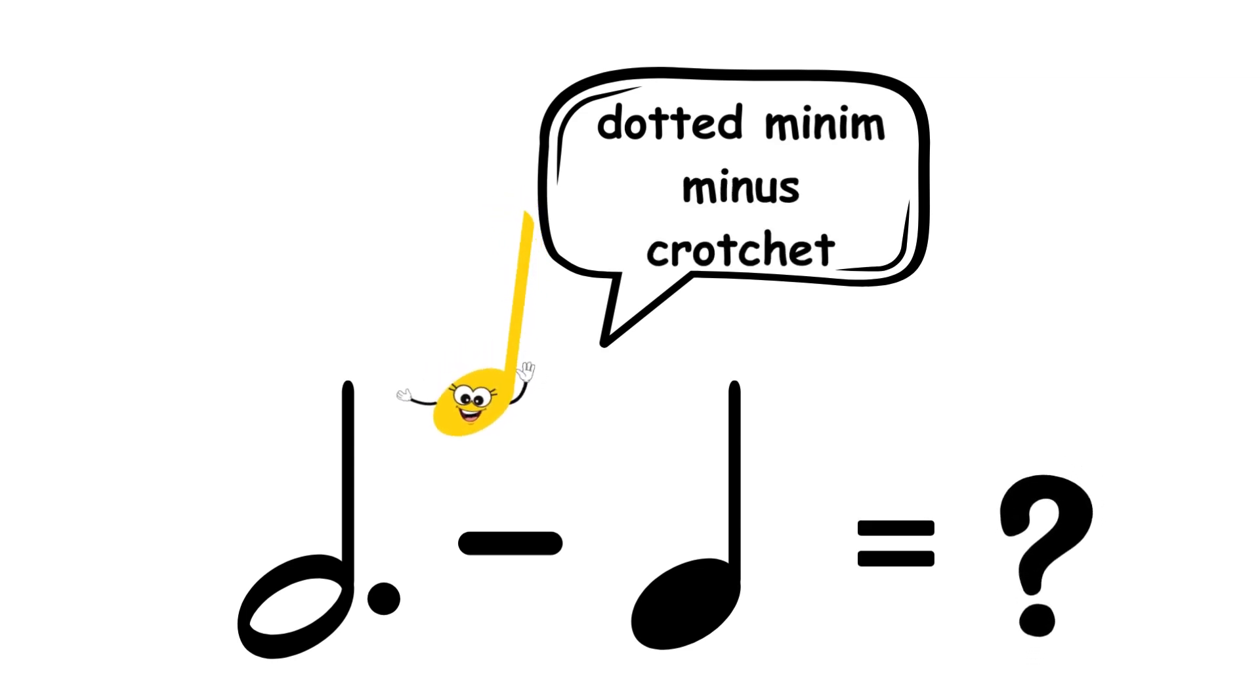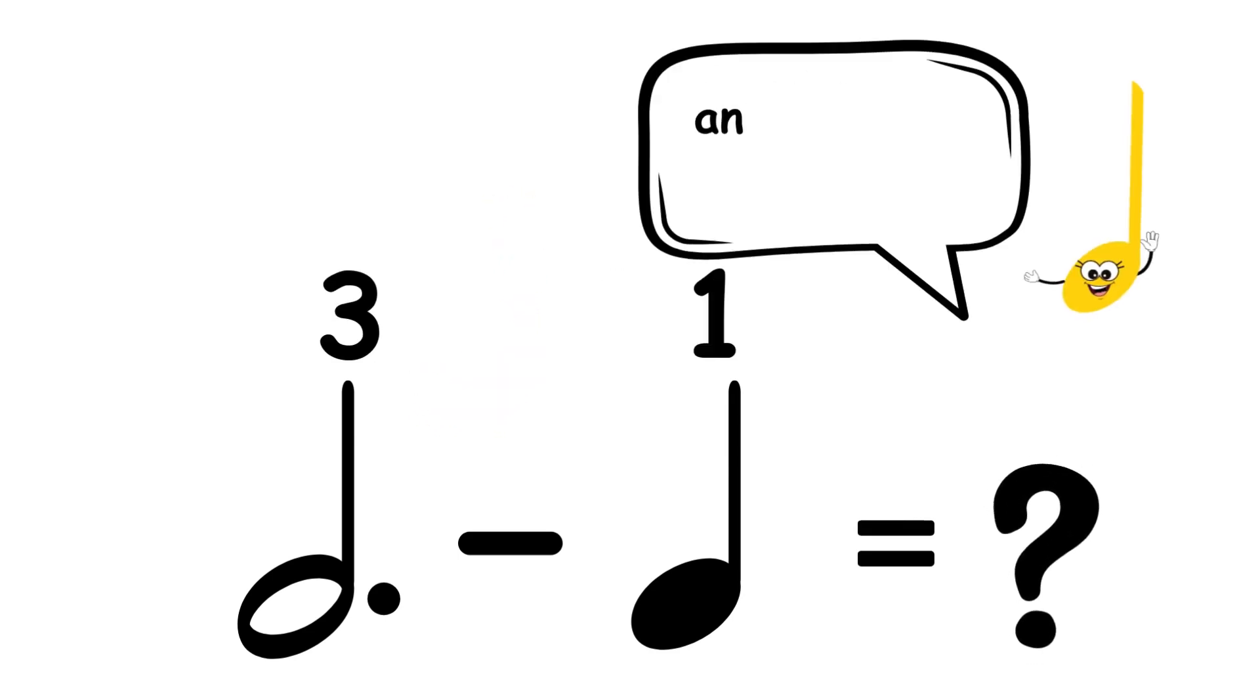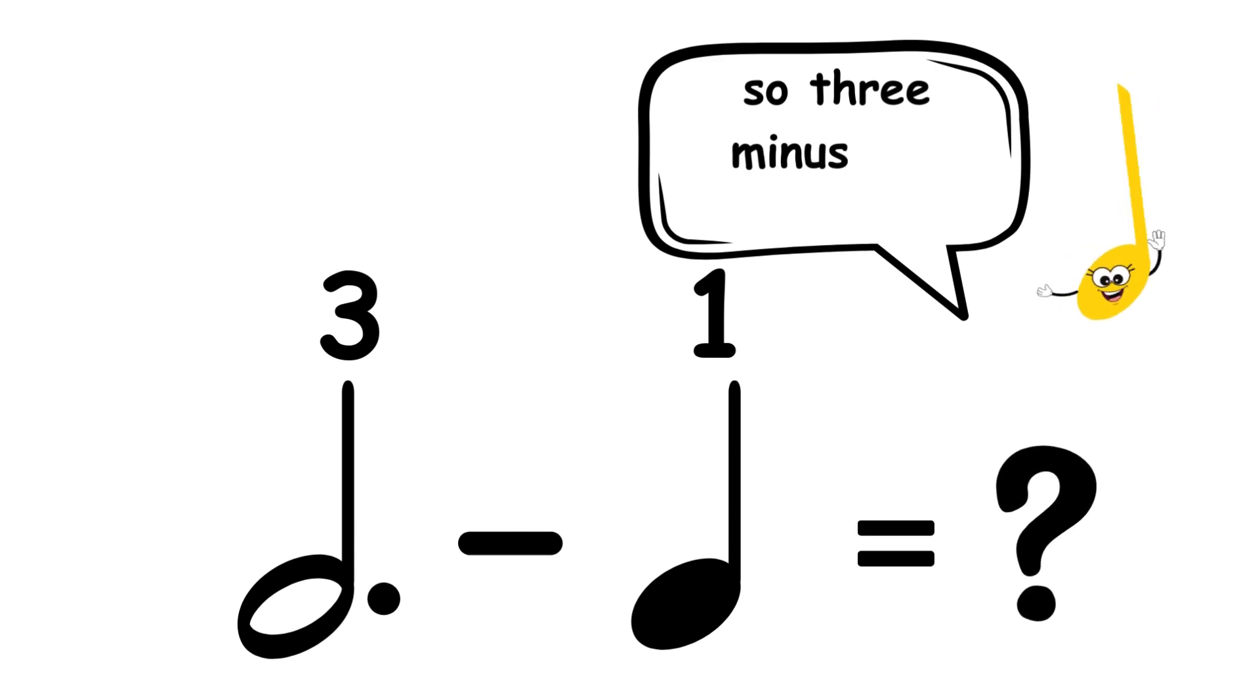Dotted minim has 3 beats, minus crotchet or quarter note which is 1 beat. So, 3 minus 1 equals 2!